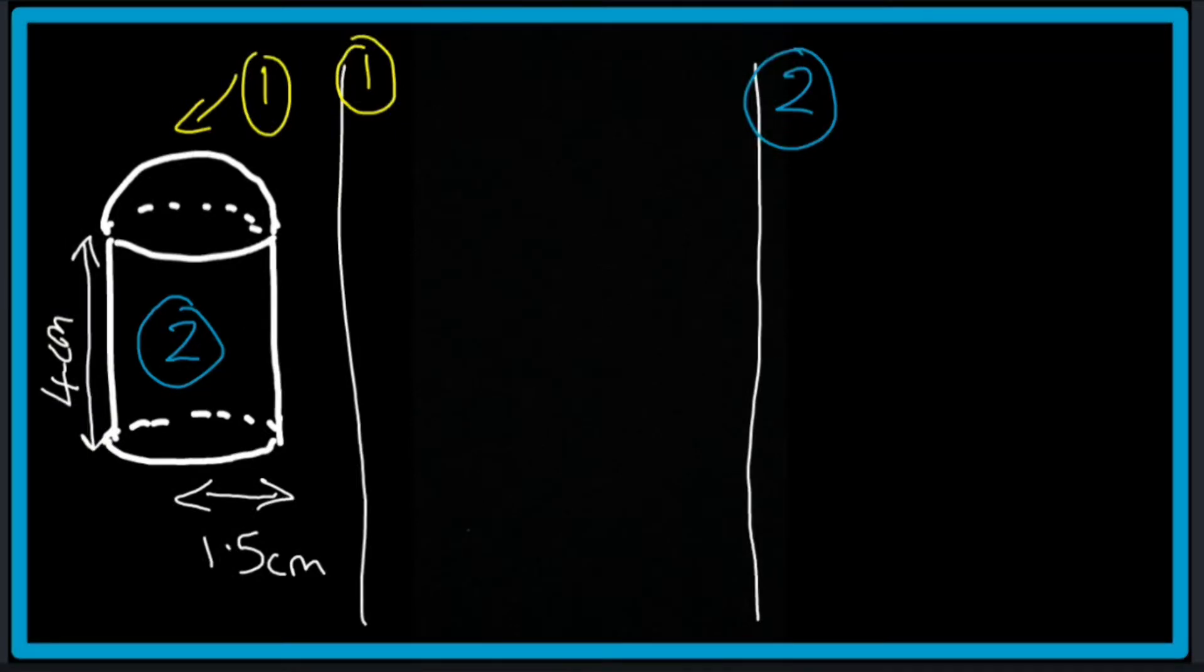To get the volume of this shape here I have split it into two parts. Part number one is the hemisphere at the top and part number two is the cylinder.